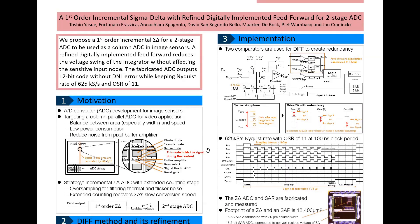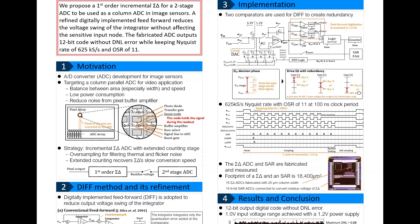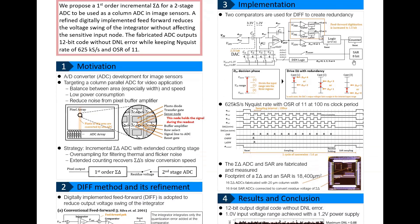This is a diagram of the circuit implemented in our test chip. We increased the feedforward path to 1.5-bit to keep stability even if there is a comparator offset, and an 8-bit SAR ADC is connected as a second stage.